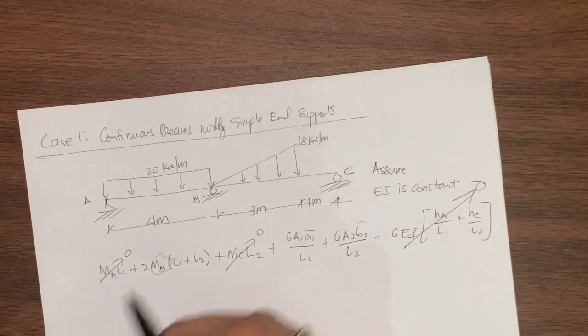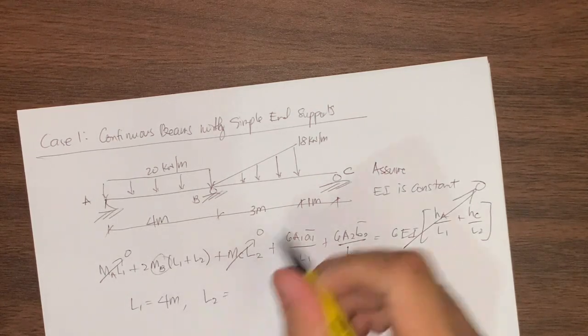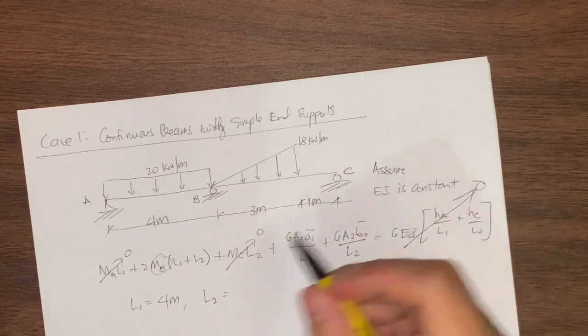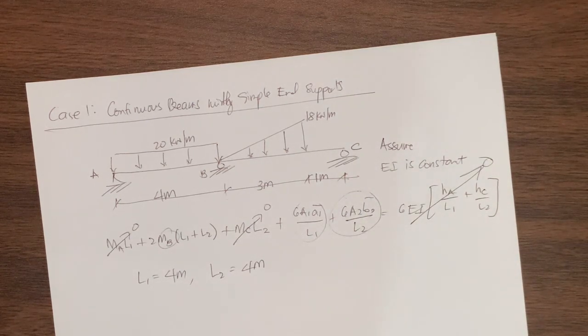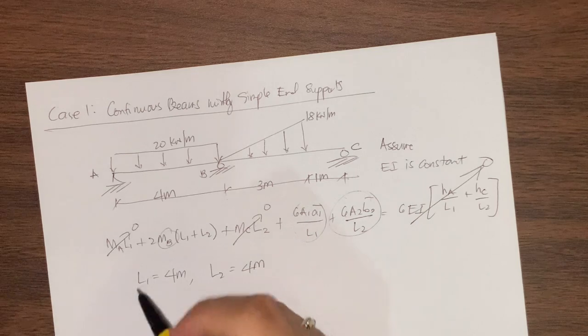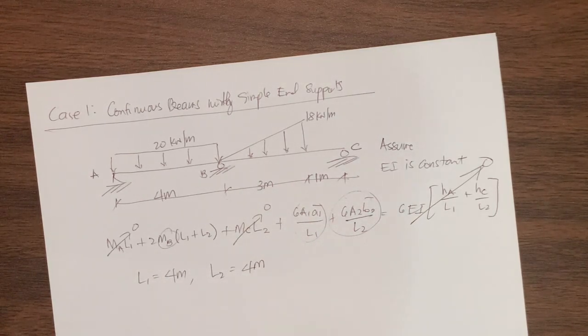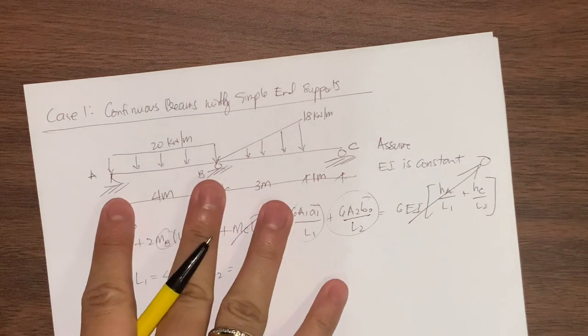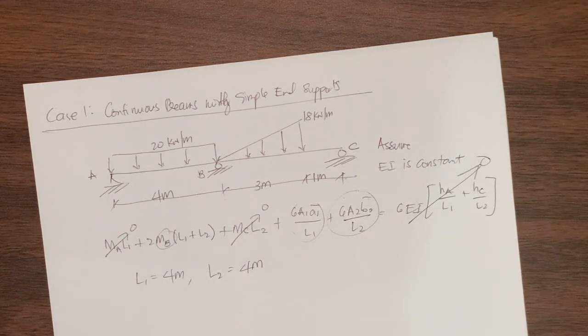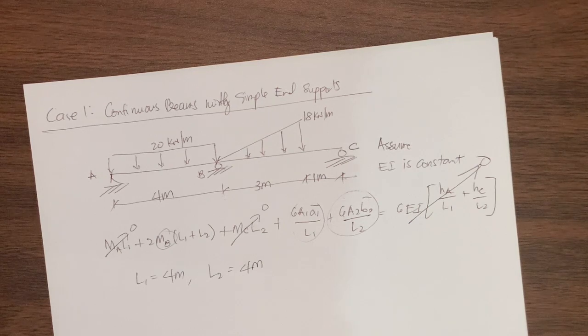The unknown here is actually MB. L1 is the length of the first span which is 4 meters, while L2 is the length of the second span, also 4 meters. What we need is the value of 6AA over L. Again, last time, there are different methods in determining the value of 6AA over L. Some use the first span and use moment by parts. But as I discussed in the last part of the video during the derivation and concept discussion, 6AA is actually just equal to the integral of PA multiplied by L squared minus A squared divided by L.